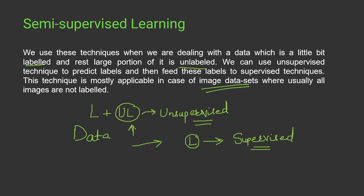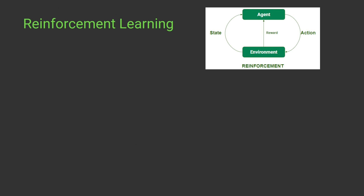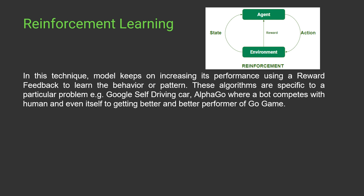The last type is reinforcement learning. Essentially, the model keeps on increasing its performance using a reward feedback mechanism to learn behavior or patterns. Good examples are Google's self-driving car and AlphaGo, where the bots compete with humans and with themselves to become better and better performers.